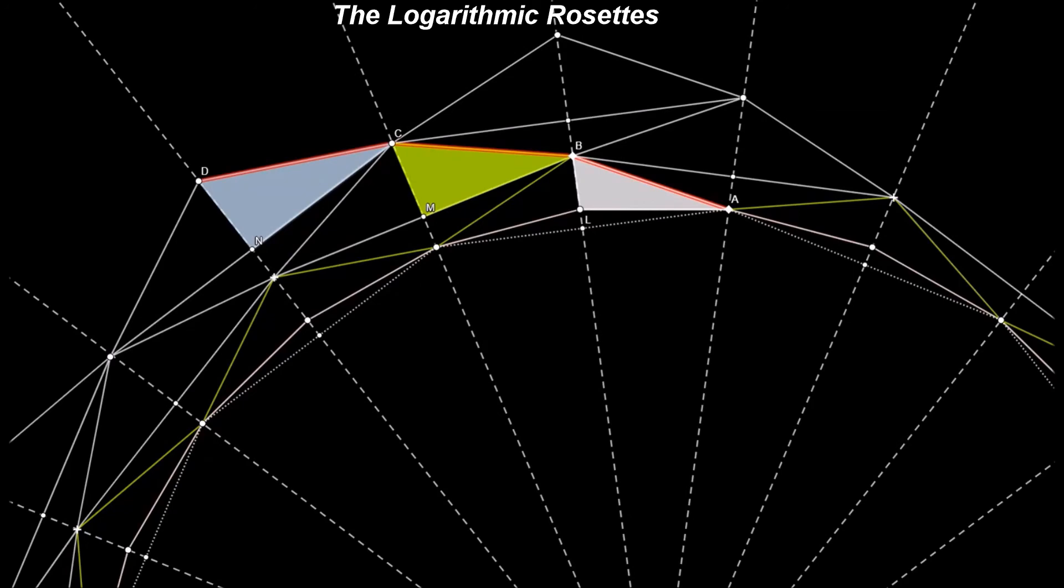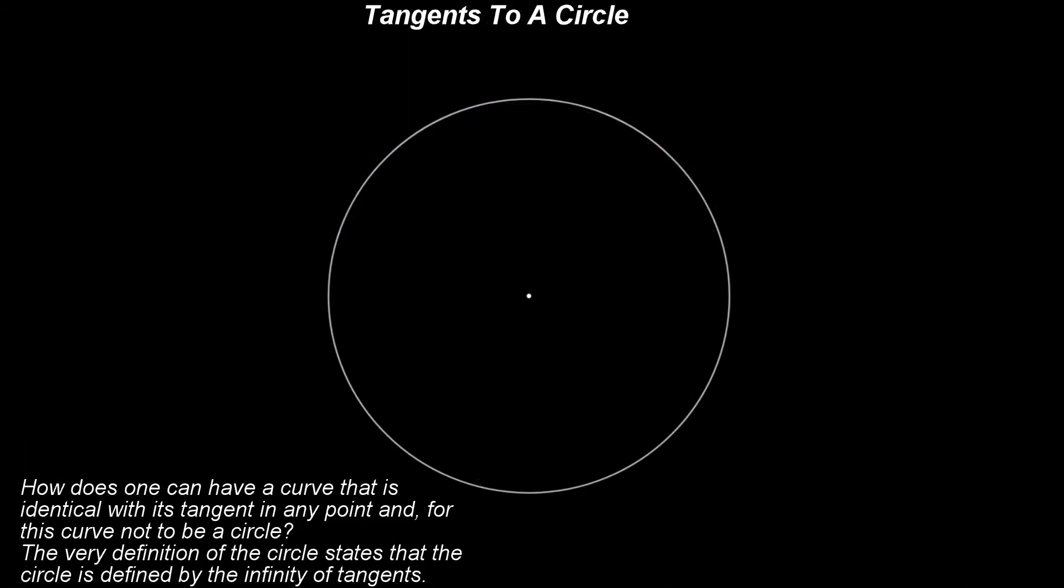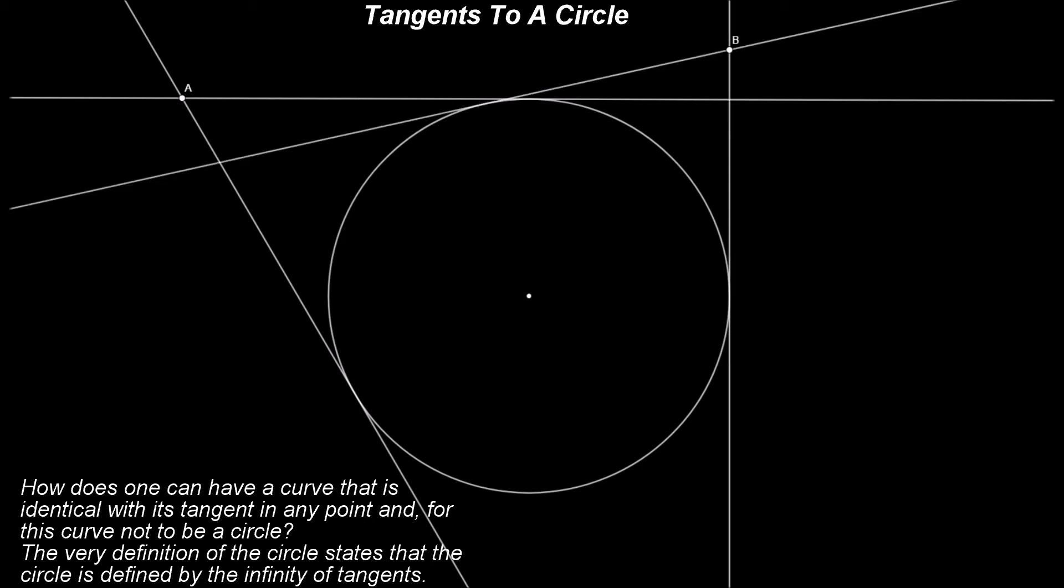By changing the location of the point B, one changes the angle between BA and the radius OA. Looking closer into our example, we can see that we can find a location for B such that this angle is 90 degrees.